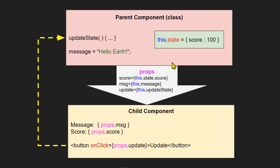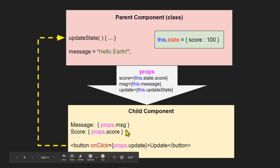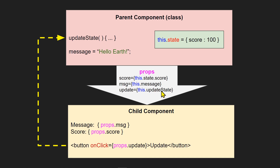In the child component, you receive the props object. You have to explicitly put it in your function — either in the constructor if it's a class component, or in the function parameters if it's a function component. Through props, you can access the passed data using dot notation: `props.msg` gives you the message, `props.score` gives you the score, and `props.update` calls the callback function.